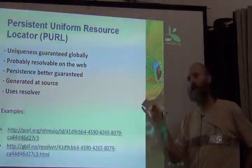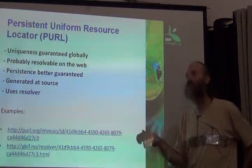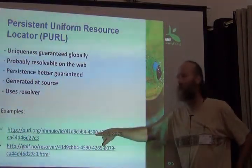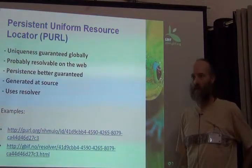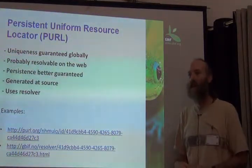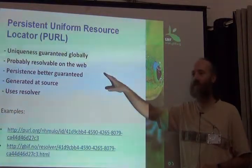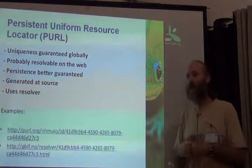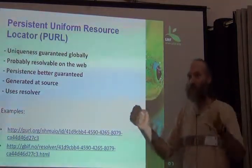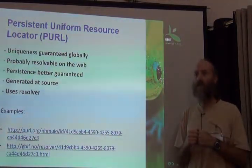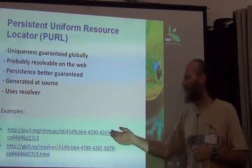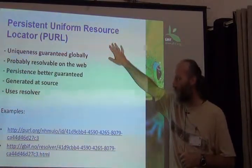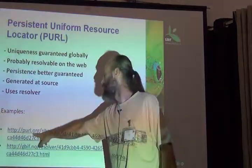If arctos.database.museum goes away, I can't get that page. But if I register that URL at purl.org, then at purl.org I can maintain a registry of where that URL is supposed to go. I can change where it is supposed to go — it's still unique on the web, but purl.org can redirect it for me. So I can turn my database server off because I created a new database server at some other institution and point all my URLs over there. I don't have to change my URLs in my database — those are globally unique persistent identifiers and I should never change those.